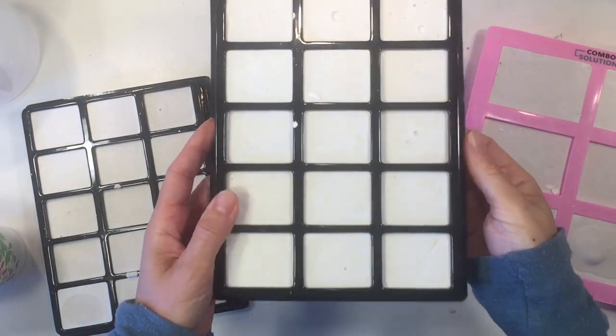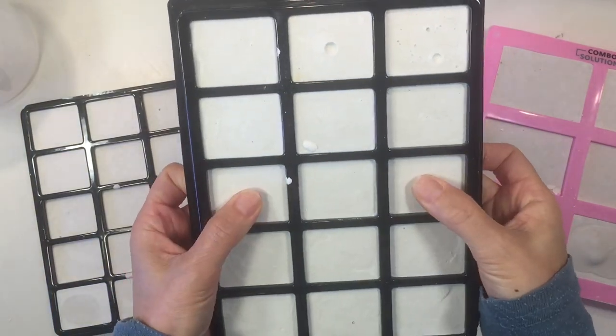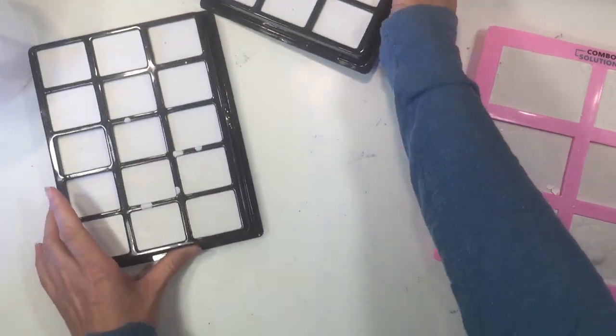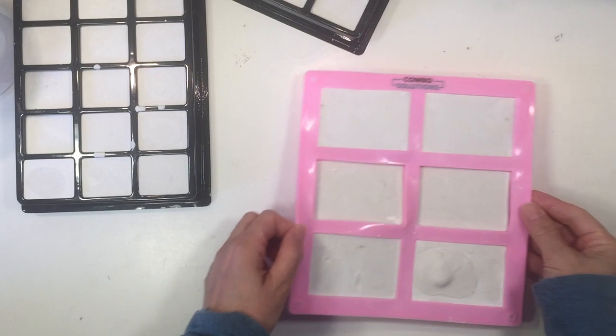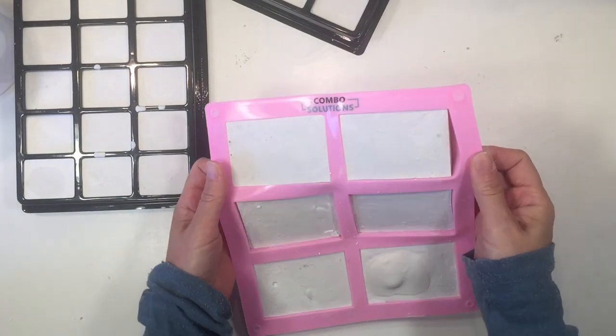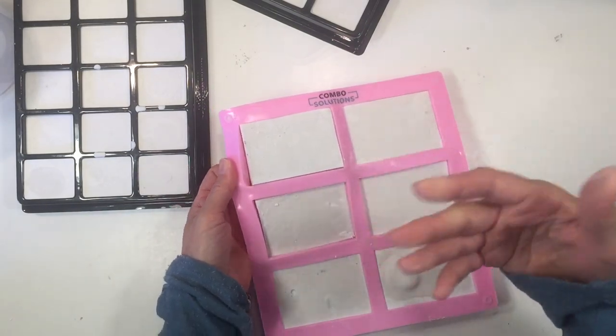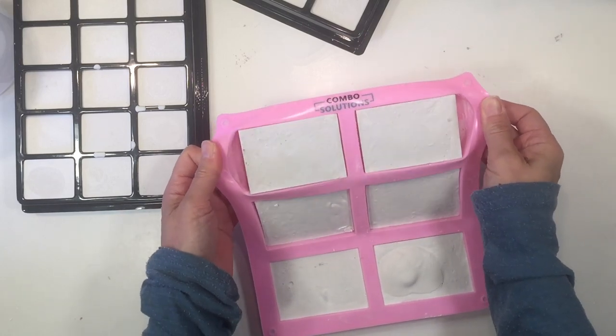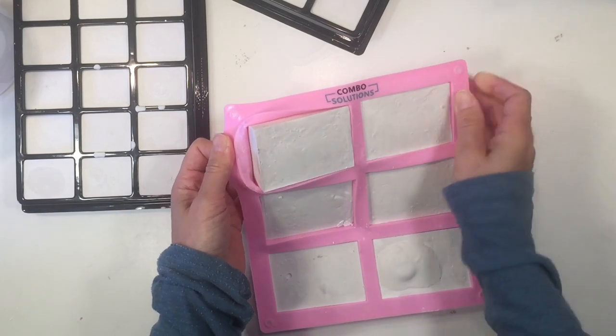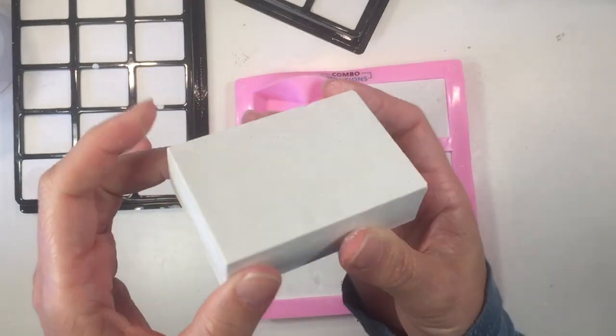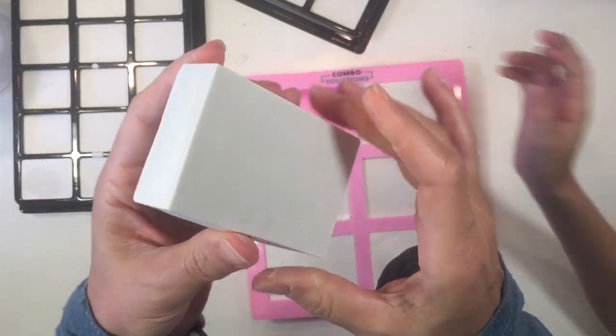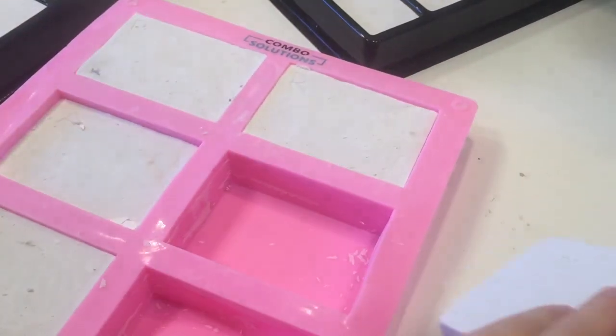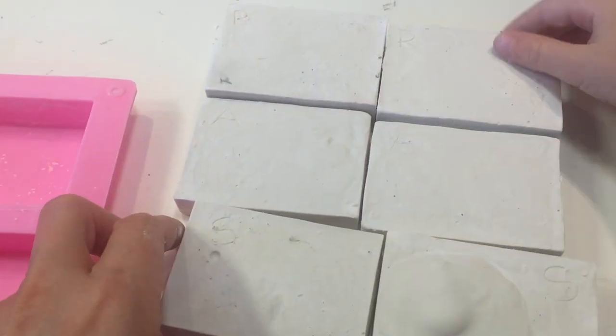These have been setting for about an hour to two hours and they're set but they're not totally cured yet. So you can remove them, but don't start excavating them yet. They're going to take several days to get hard enough for you to excavate them. I mean you could excavate them now, but it would only take you like 10 minutes to get through it. Look how easily these are going to pop right out. The silicone molds are perfect for this. Look how beautiful that is. These are going to be so much fun.